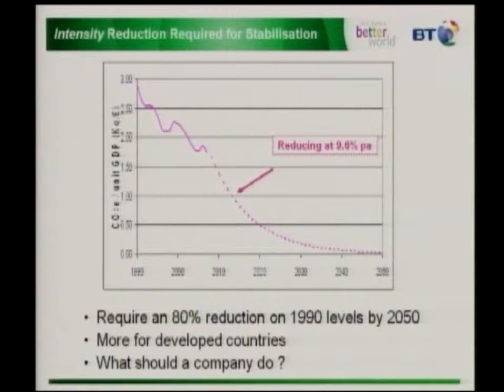The average reduction — the reduction number by 2050 based on 1990 — is 80% per unit of gross domestic product. And in order for developing countries to be able to catch up, developed countries need to do a little bit more — about 90%, so developing countries can get to about 70%. That's what countries need to do. But the question really for us now is: what do companies need to do if that's what countries need to do?